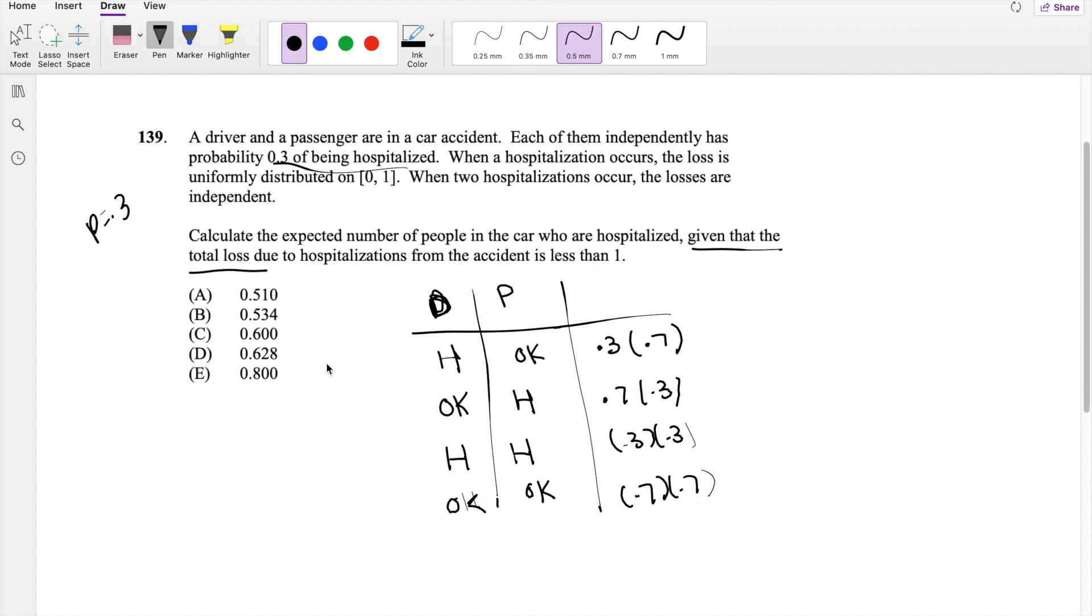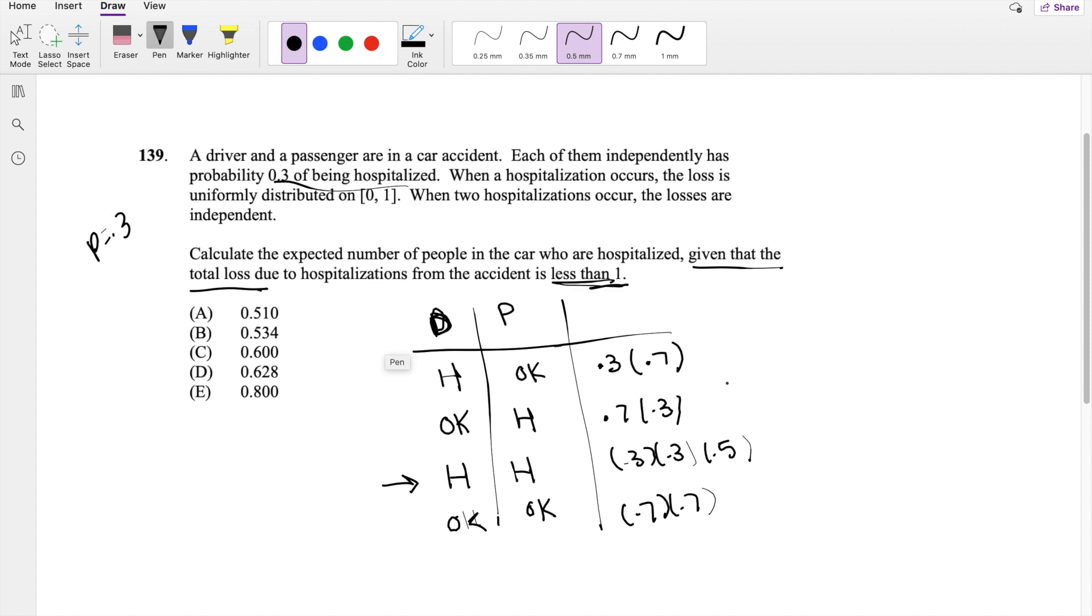where there's two people that are hospitalized, then we know the probability that the total loss due to hospitalization, if two of them are in the hospital, is 0.5. Does that kind of make sense? Because if both of them went to the hospital and their loss is both uniformly distributed on 0 to 1, if you want the total loss to be less than 1, then the probability that it's going to be less than 1 is half as likely. So that's why you have to make sure you multiply by 0.5, because it's the conditional probability.